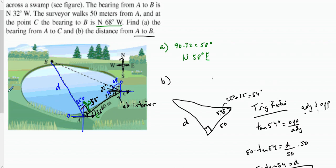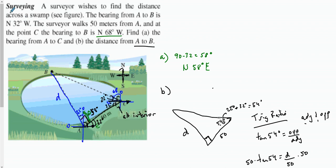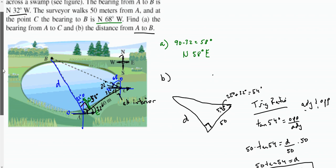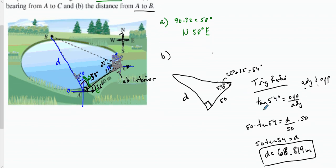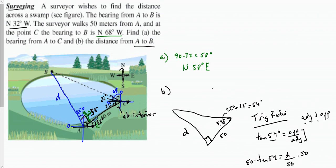This was an example of how to do surveying using compass directions, angles, and finally how to solve for a side of a right triangle once we figure out the angle and look at our given sides. I hope this helps — good luck and God bless on the rest of the problems.